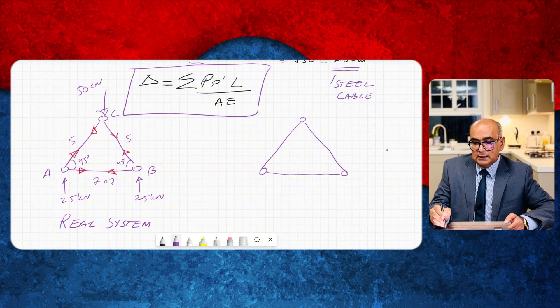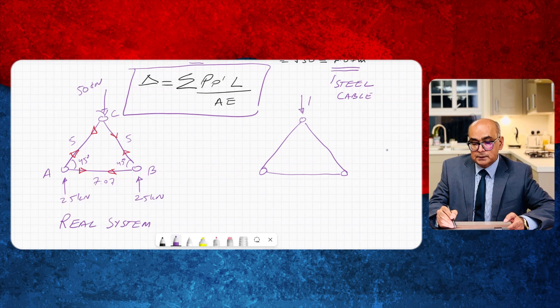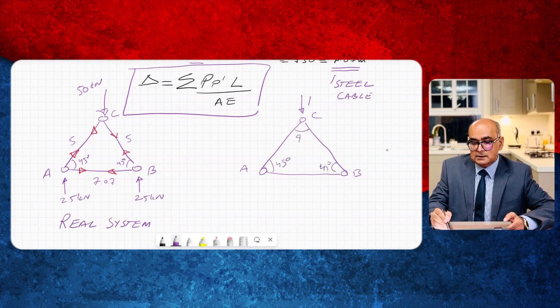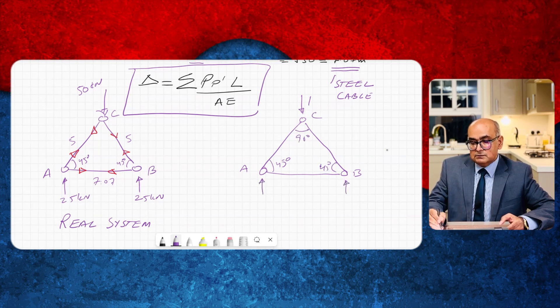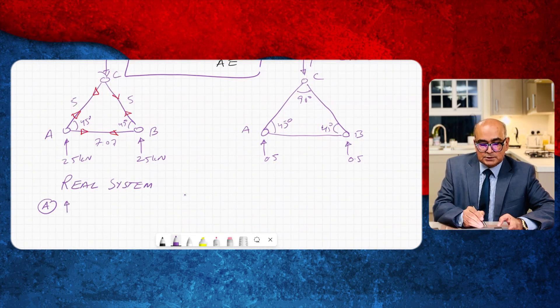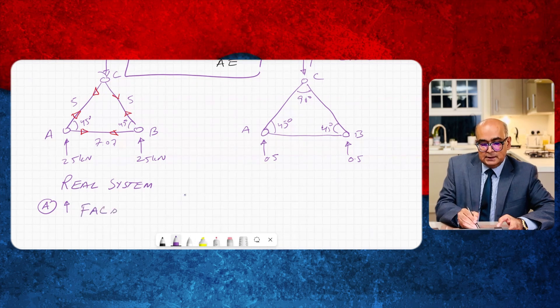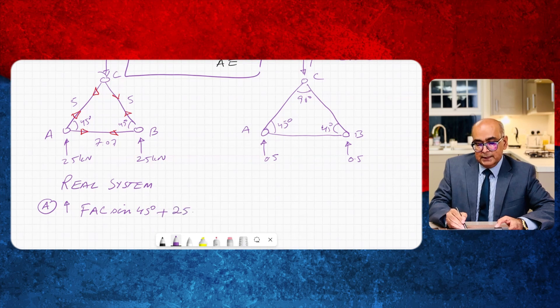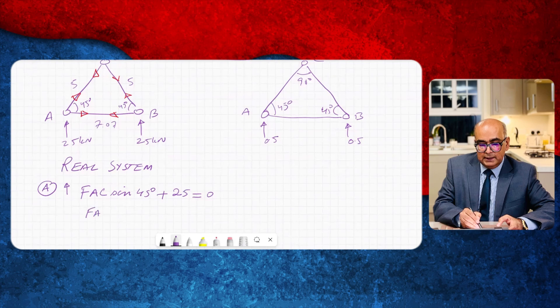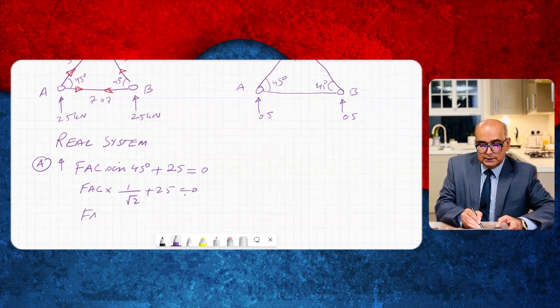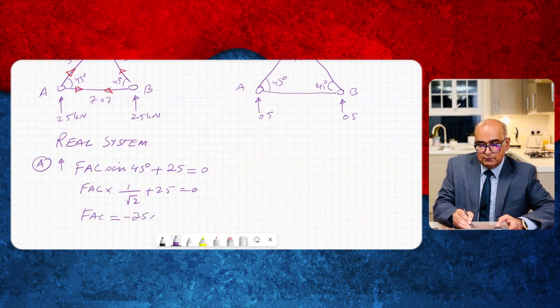Remember that these angles are 45 and 45. Let us construct the virtual system. In virtual system again I will have the same geometry but the load will be one Newton. We have 45 degrees, 45 degrees here and this angle is 90 degree and the reactions will be half of applied load 0.5 and 0.5 newtons. Let us use method of joints to work out member forces. At joint A summation of vertical forces equal to 0. Vertical forces are FAC sine 45 that is going upwards. Upward is positive plus the vertical reaction which is 25 is equal to 0.